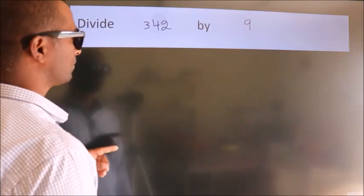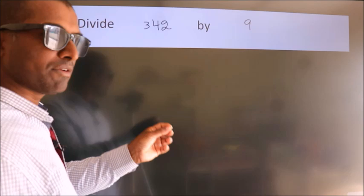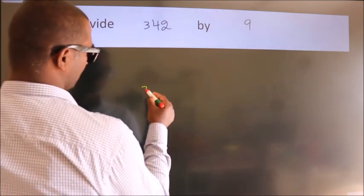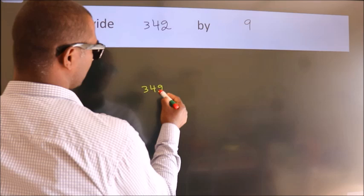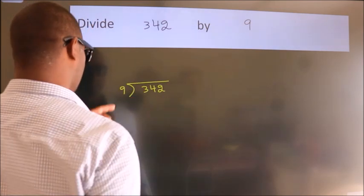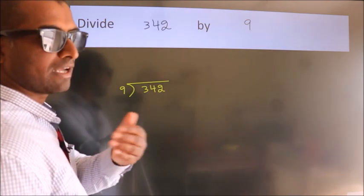Divide 342 by 9. To do this division, we should frame it in this way: 342 here, 9 here. This is your step 1.